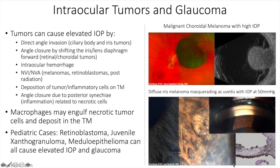Formation of NVI or NVA can occur with melanomas and retinoblastomas, as well as with post-radiation ocular ischemia, which can be a sequela of both proton beam radiotherapy and less frequently after plaque brachytherapy. Deposition of tumor or inflammatory cells on the trabecular meshwork is another cause.